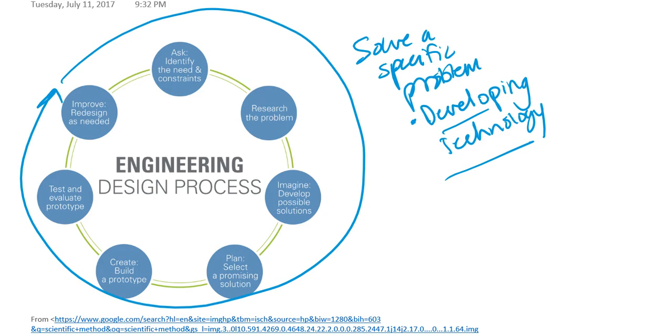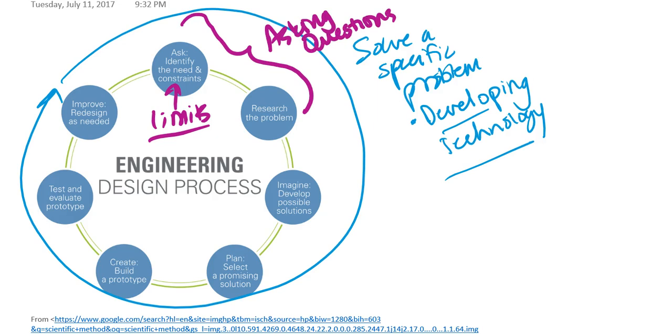Now, notice that the engineering design process actually does have steps in common to the scientific method. It's not a completely brand new concept. Basically, when we're asking questions to identify the need or identify constraints (constraints mean limits), and we're researching the problem, that's the same thing as asking questions in the scientific method or making observations. And if we consider the imagining, developing possible solutions, selecting a promising solution, all of this is actually something that can be considered brainstorming.